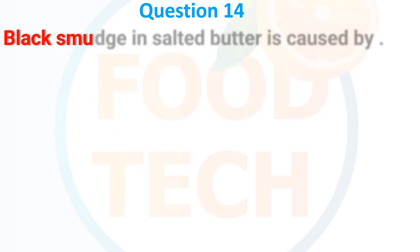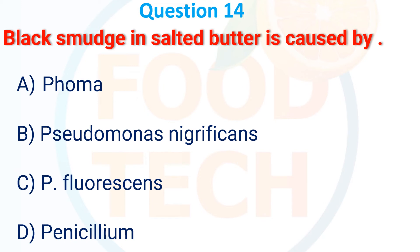Black slump in salted butter is caused by: A, Phoma; B, Pseudomonas nigricans; C, P. purrefaciens; D, Penicillium. The answer is B, Pseudomonas nigricans.